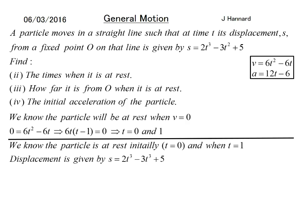Part three: How far is it from O when it is at rest? We know the particle is at rest initially at t = 0 and when t = 1. The displacement is given by that, so if we put zero in and we'll put one in and work out the difference between them.